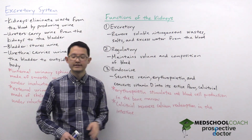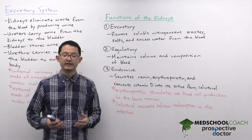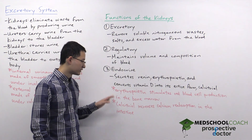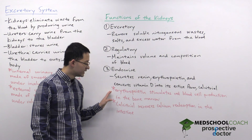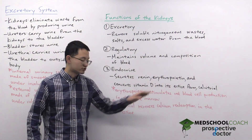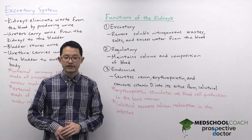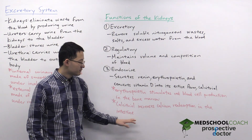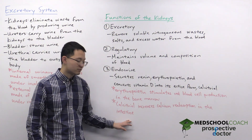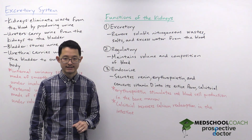Erythropoietin is an important hormone that acts on the bone marrow to stimulate the production of red blood cells. Calcitriol helps to increase blood calcium by stimulating calcium reabsorption in the intestines.